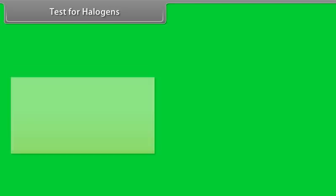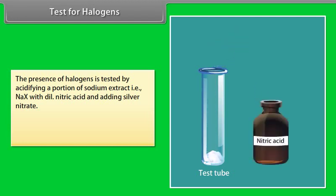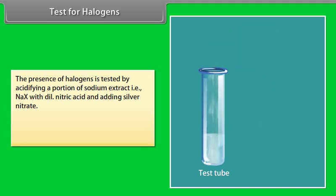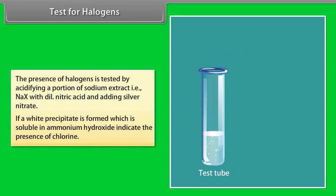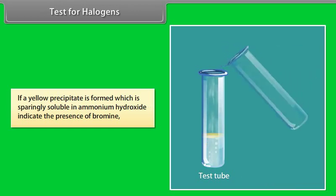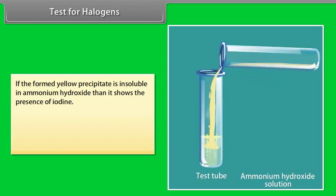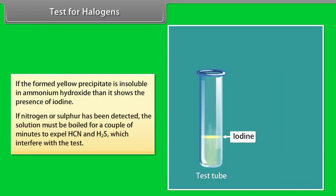Test for halogens: the presence of halogens is tested by acidifying a portion of the sodium fusion extract (NaX) with dilute nitric acid and adding silver nitrate. A white precipitate soluble in ammonium hydroxide indicates chlorine. A yellow precipitate sparingly soluble in ammonium hydroxide indicates bromine. A yellow precipitate insoluble in ammonium hydroxide indicates iodine. If nitrogen or sulphur has been detected, the solution must be boiled for a couple of minutes to expel HCN and H₂S, which interfere with the test.